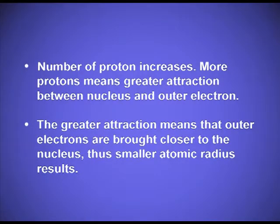The two main reasons are: the number of protons increases, and more protons means greater attraction between the nucleus and outer electrons. The greater attraction means the outer electrons are brought closer to the nucleus, thus a smaller atomic radius results. You can clearly see how the electron cloud is shrinking and atomic radii is decreasing as electrons go into the same shell while effective nuclear charge is increasing.